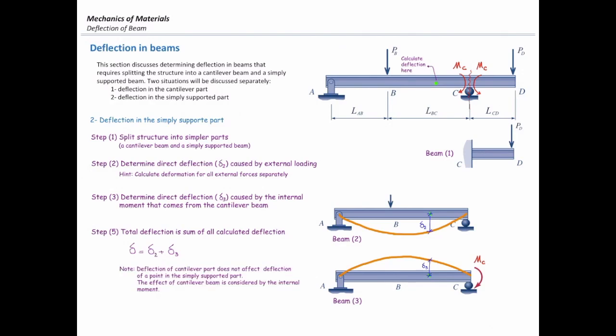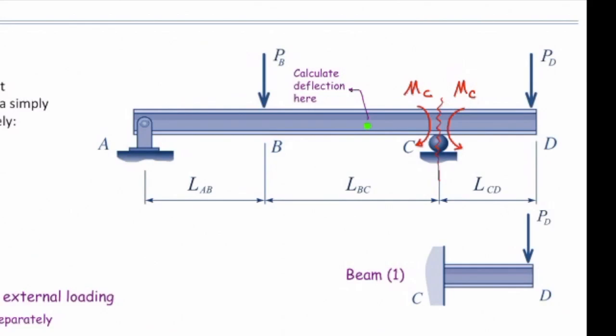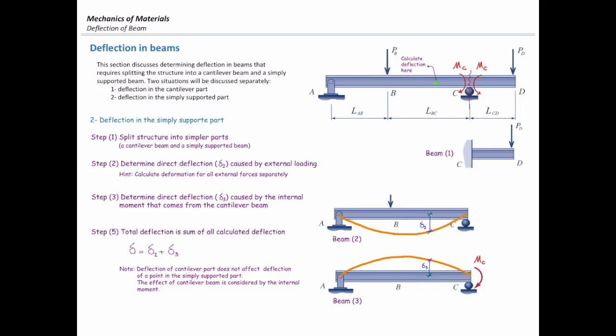One important note: the deflection of the cantilever part does not directly affect the deflection of a point inside the simply supported part. The effect of the cantilever beam is considered through the internal moment it transmits. That internal moment affects deflection inside the simply supported beam, but we do not directly add the cantilever deflection to the simply supported part's deflection.